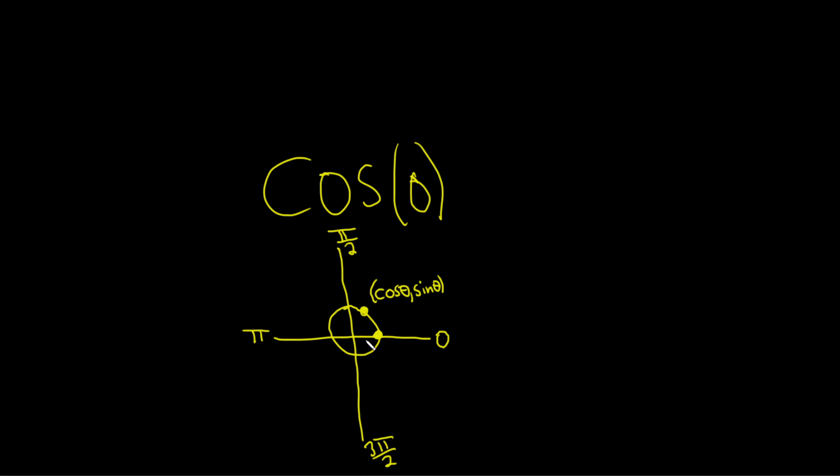Because this is a unit circle, the distance to get from the center of the circle to this point is one, so this is the point one comma zero.